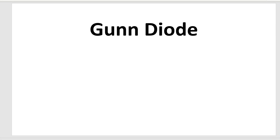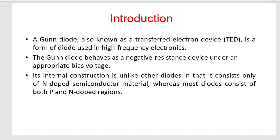We call it a diode because it has two electrodes: cathode and anode. It is a transferred electron device, meaning electrons are transferred from a high mobility state to a low mobility state. Because of the movement of electrons from high to low mobility, the device shows negative resistance. This Gunn diode is also called the transferred electron device and it is used at very high frequencies.